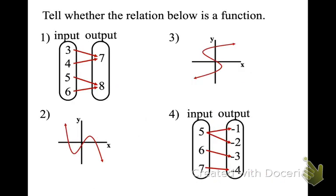Let's look at all the different ways we talked about functions. This map really means the ordered pairs: (3,7), (4,7), (5,8), and (6,8). We could even make that into a table. None of my x's repeat, so that is a function.